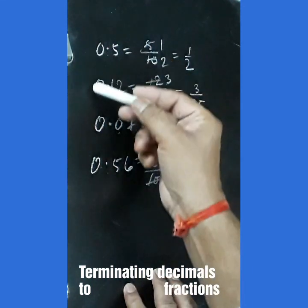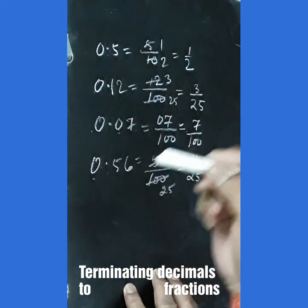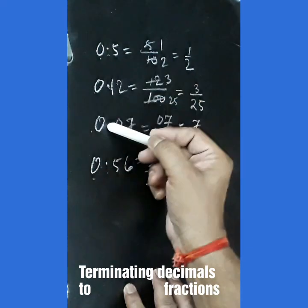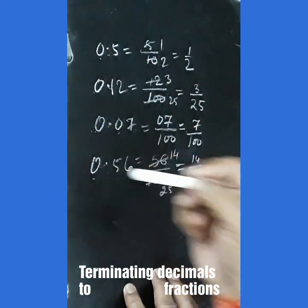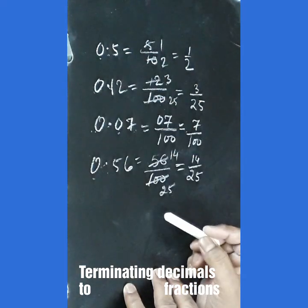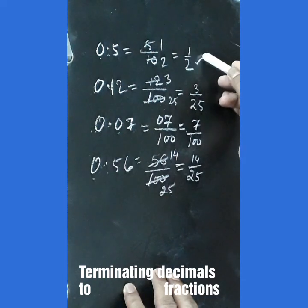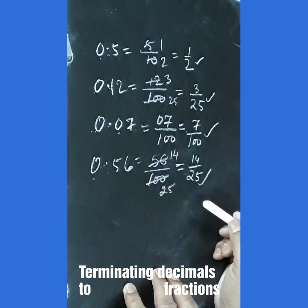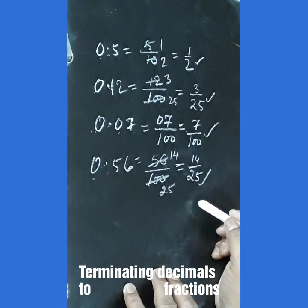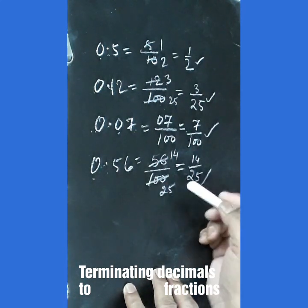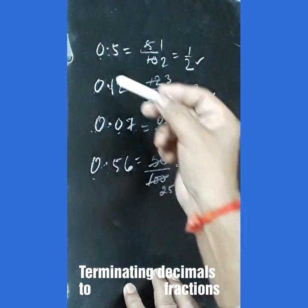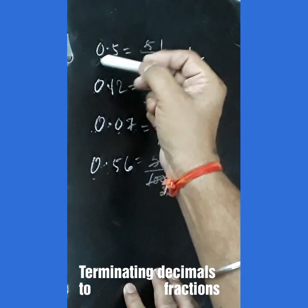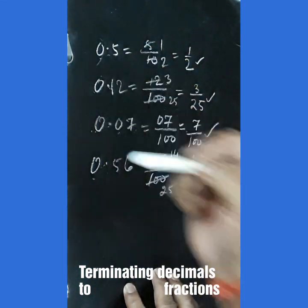In all these examples, we have 0 before the decimal. So we are getting all the fractions as proper fractions. Now we will take some examples where we have a whole number part other than 0.